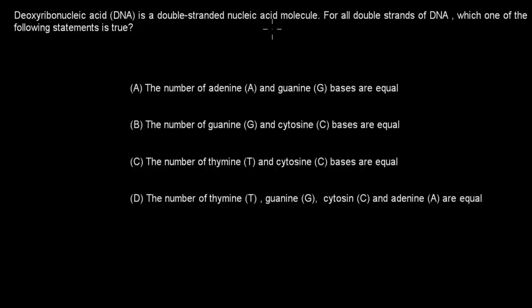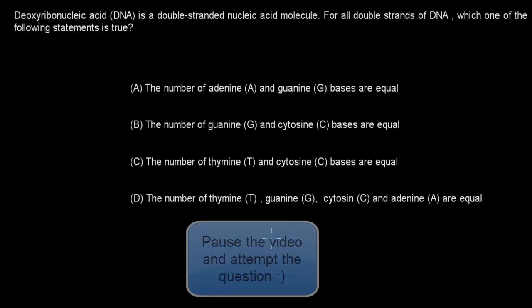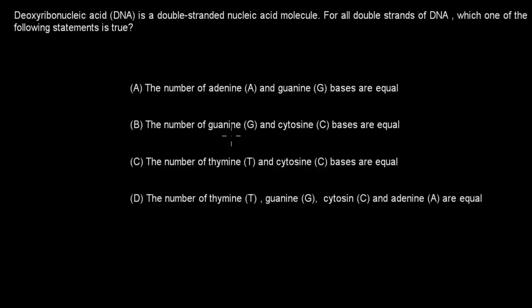Deoxyribonucleic acid or DNA is a double stranded nucleic acid molecule. For all double strands of DNA, which one of the following statements is true? A. The number of adenine and guanine bases are equal. B. The number of guanine and cytosine bases are equal. C. The number of thiamine and cytosine bases are equal. D. The number of thiamine, guanine, cytosine and adenine are equal. Are we ready? Attempt the question. Welcome back. The correct answer is B, because G always binds with C. A is false because A does not bind with G. It's A and T binding together. C is false because T and C don't always bind together. And D is false because, for example, we could have 20% thiamine, which means that T and A has to be equal, so 20% adenine. But then the last 60% can be between guanine and cytosine. So in that example we wouldn't have them all being equal. So D is false and B is the only one which is correct.